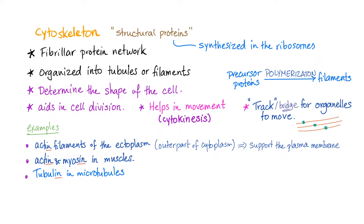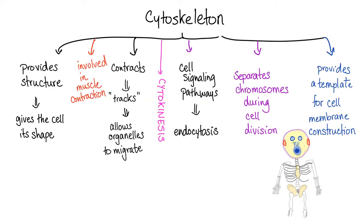They aid in cell division, help in cell movement, and they form a track or a bridge for organelles to move on. Here are the functions of the cytoskeleton: provides structure, involved in muscle contraction, provides tracks, cytokinesis, cell signaling.